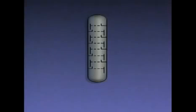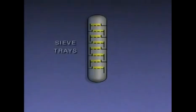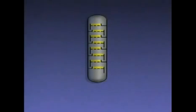Fractionation is distillation that occurs at different levels in a tower. This is a simplified illustration of the inside of one type of distillation tower. This tower uses trays called sieve trays to separate vapors and liquid. The trays are spaced throughout the tower. They're called sieve trays because they have many openings in them, like a sieve.